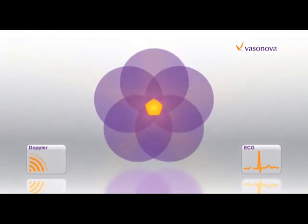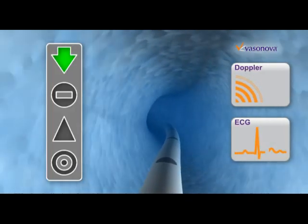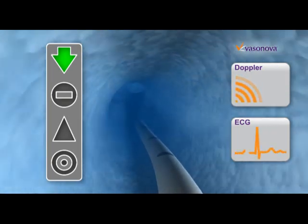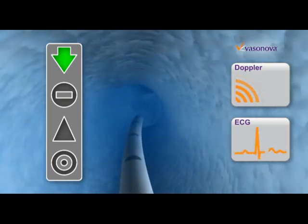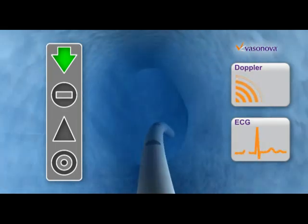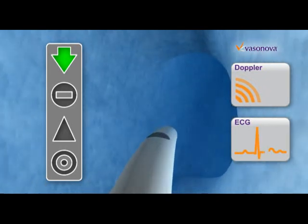The Vasonova VPS relies exclusively on real-time measurement inside the vessel for accuracy. External detection devices can only indicate the location of the catheter tip inside the body relative to the external measuring device.